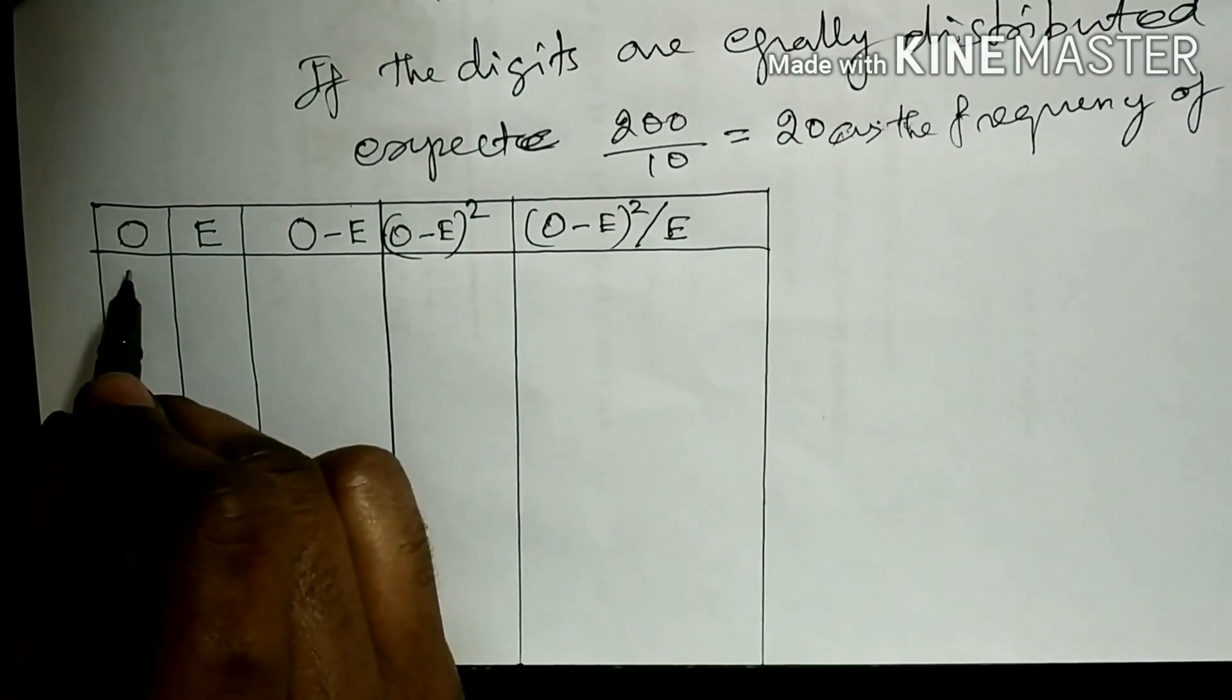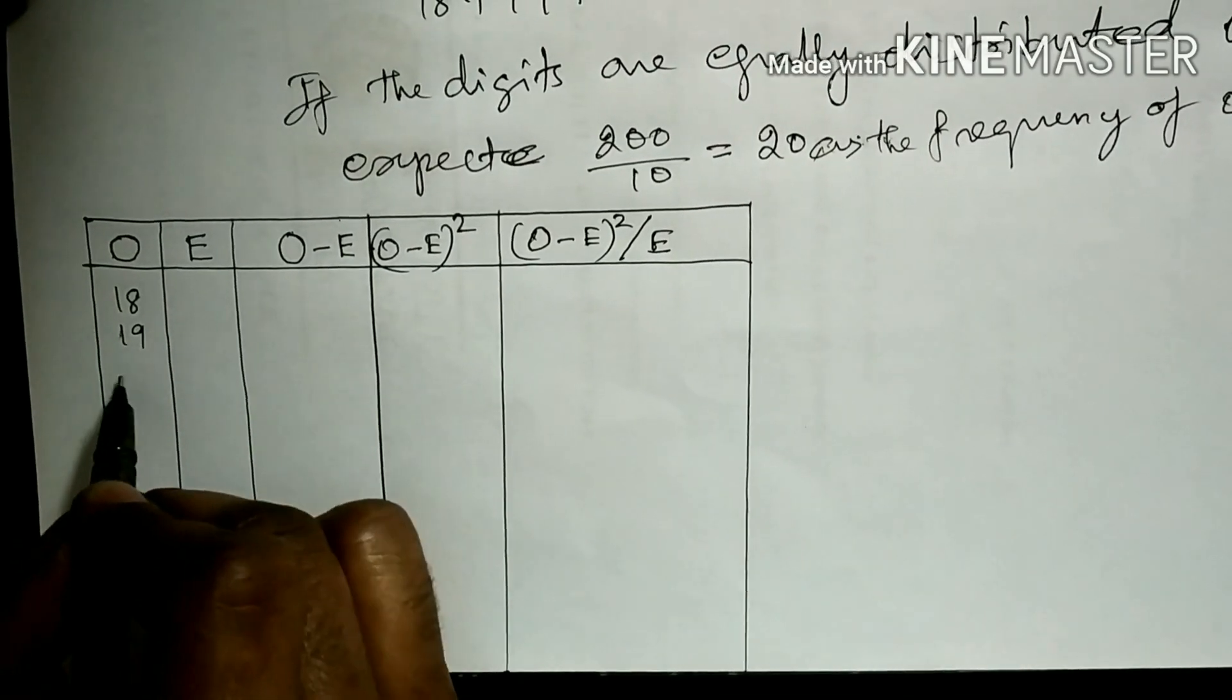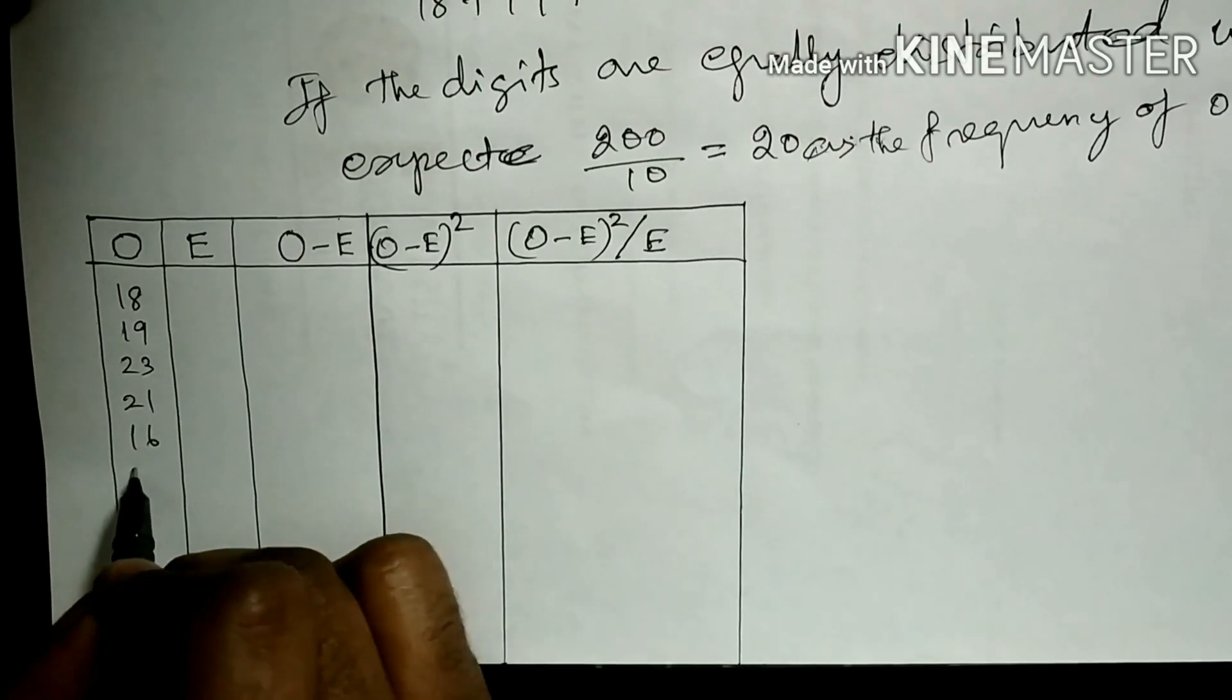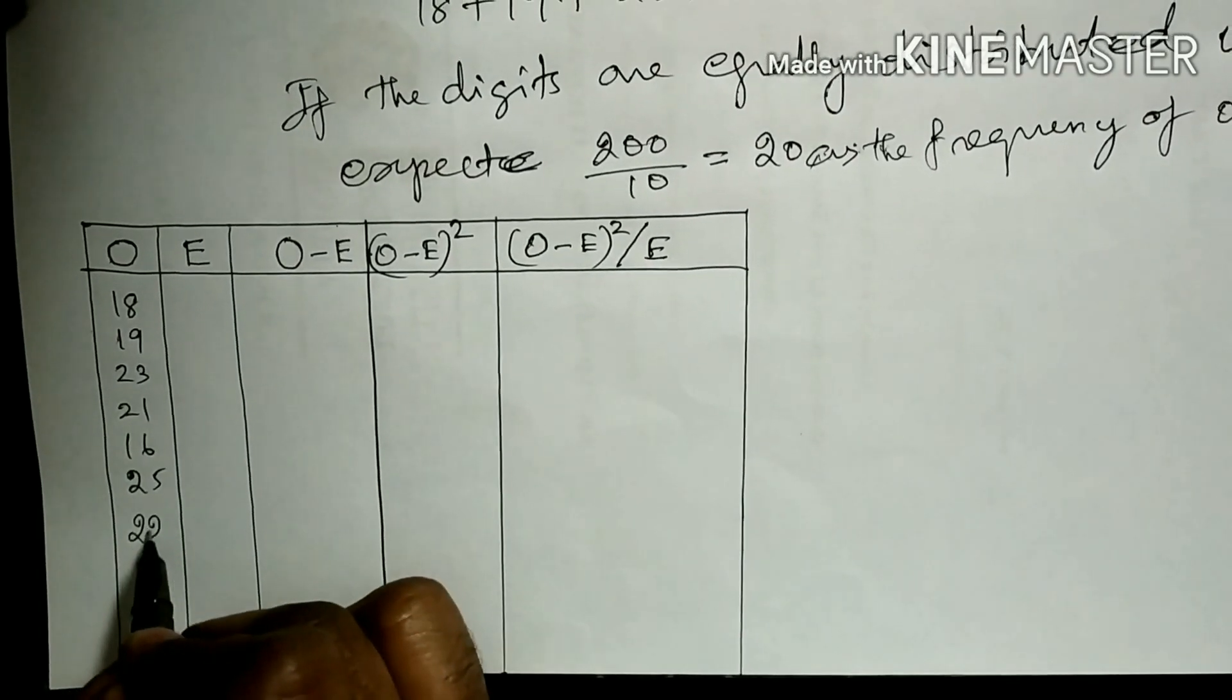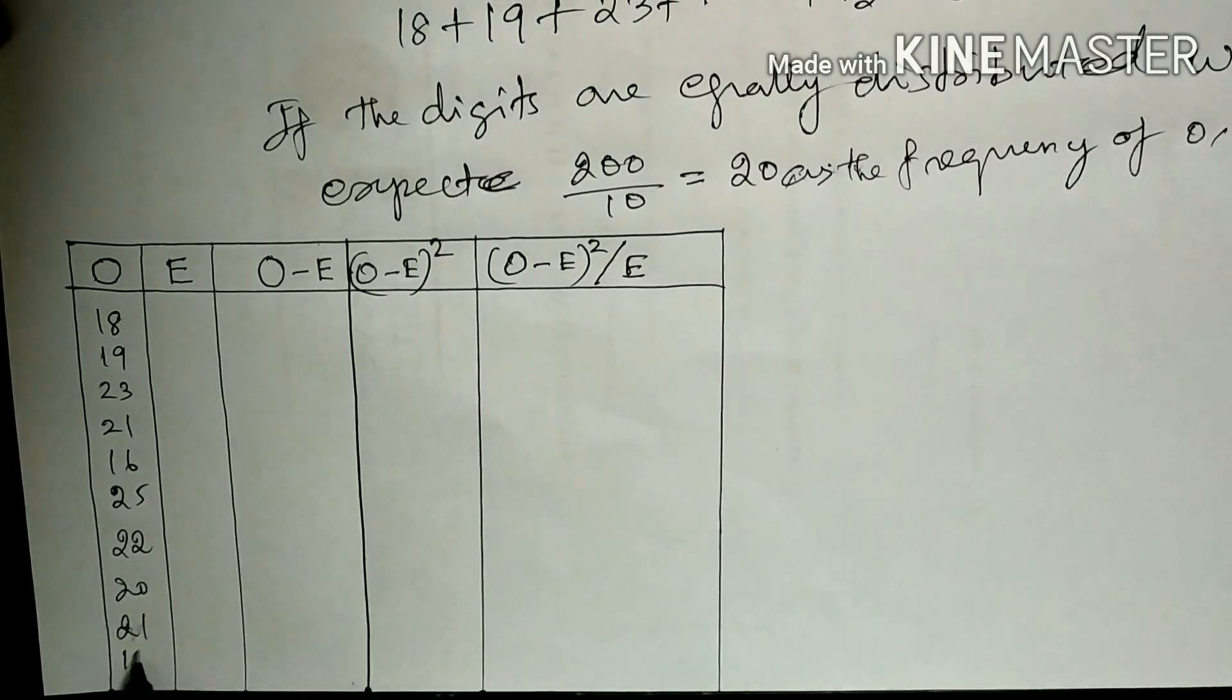Observed frequencies are given in the question: 18, 19, 23, 21, 16, 25, 22, 20, 21, and 15.